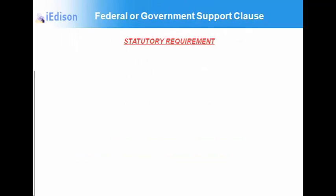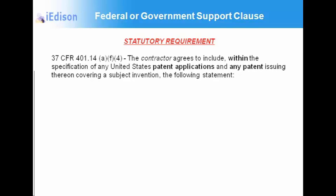Now, the federal or government support clause — this is a statutory requirement. 37 CFR 401 provides that the contractor agrees to include within the specification of any U.S. patent application and any patent issuing thereon covering a subject invention the following statement. Note that the terms contract, grant, and cooperative agreement are interchangeable for the purposes of this presentation. Same goes for contractor, grantee, and awardee.